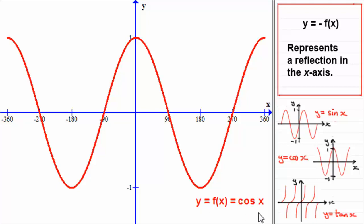f of x being cos x, and again if we try this transformation y equals minus f of x, minus cos x.